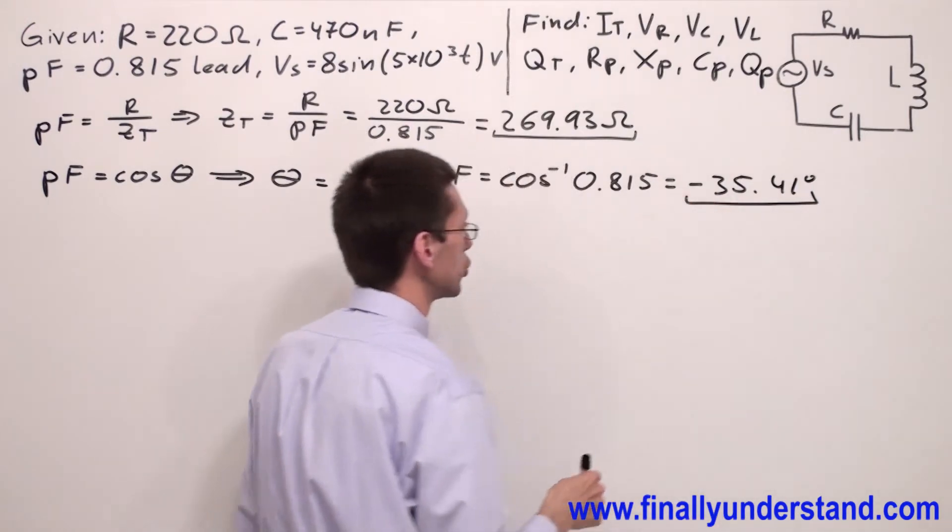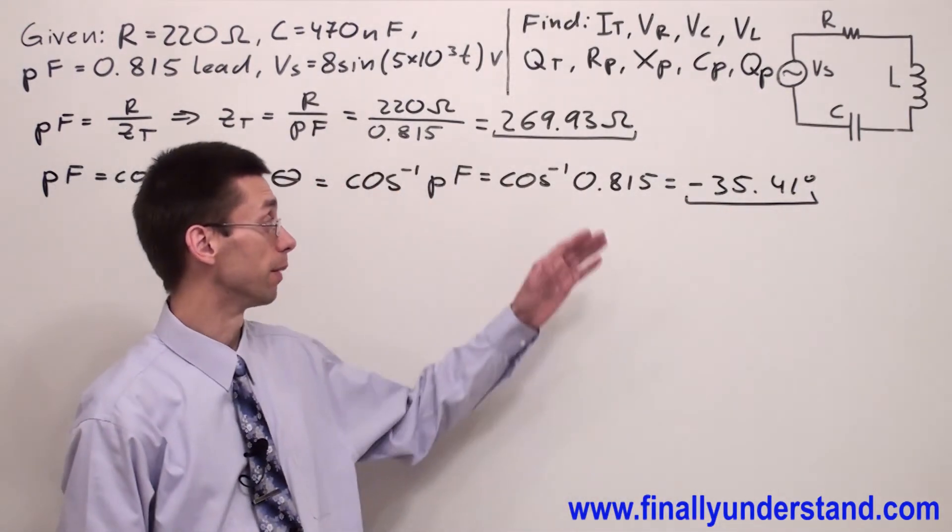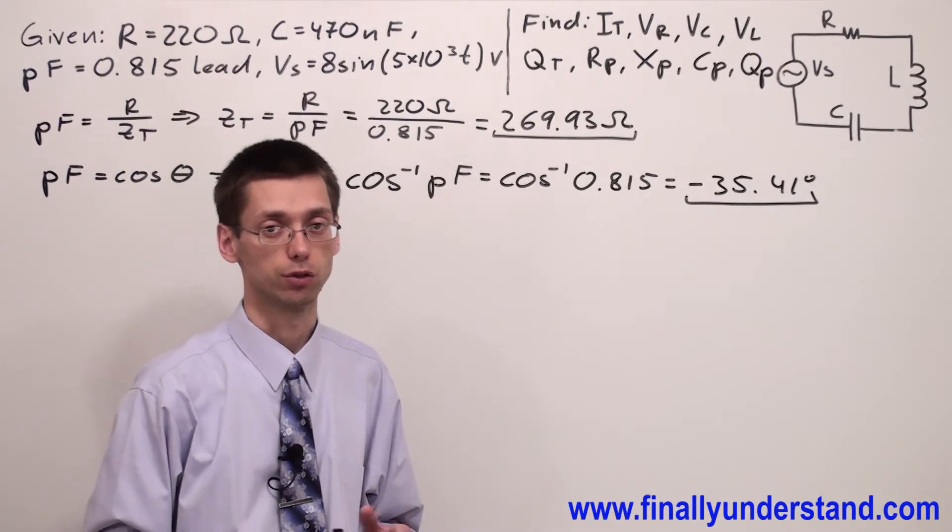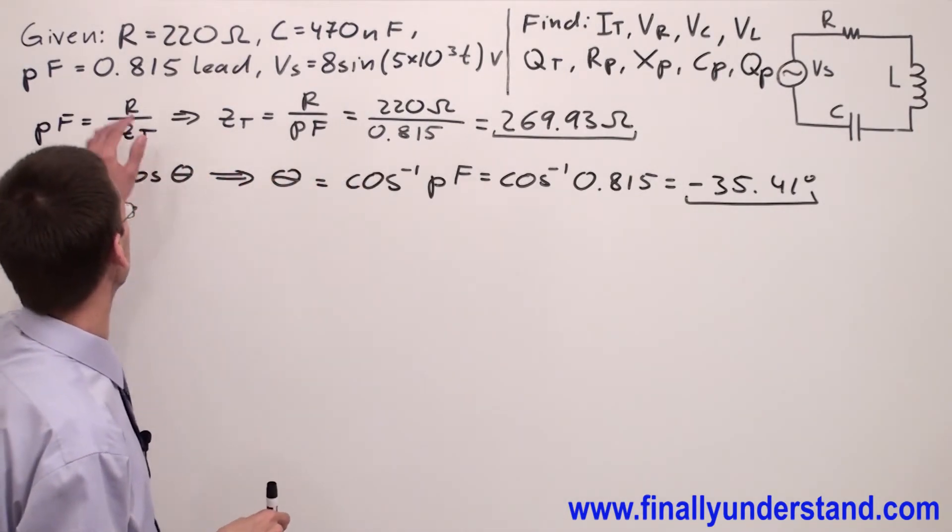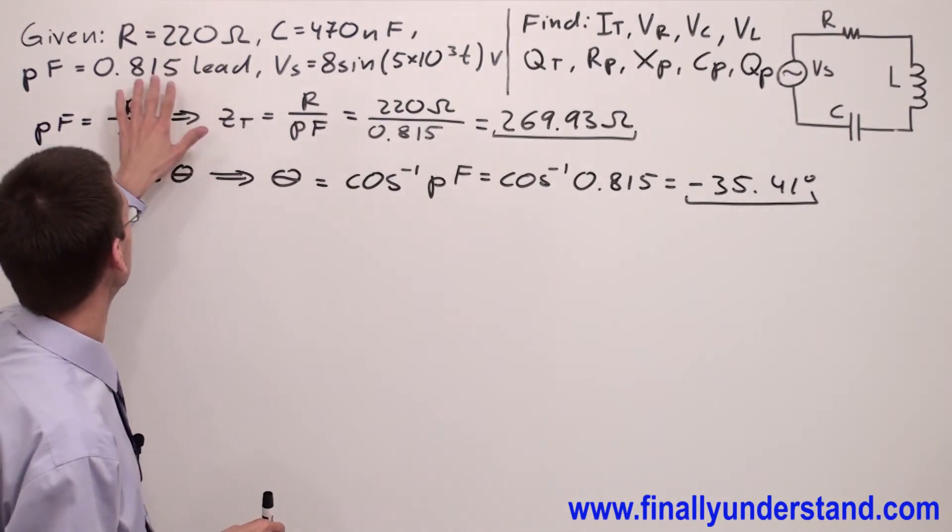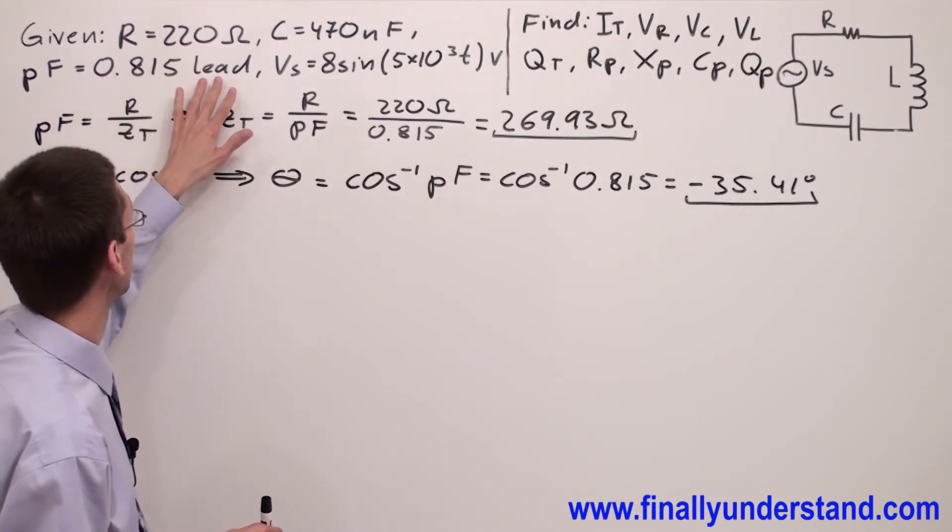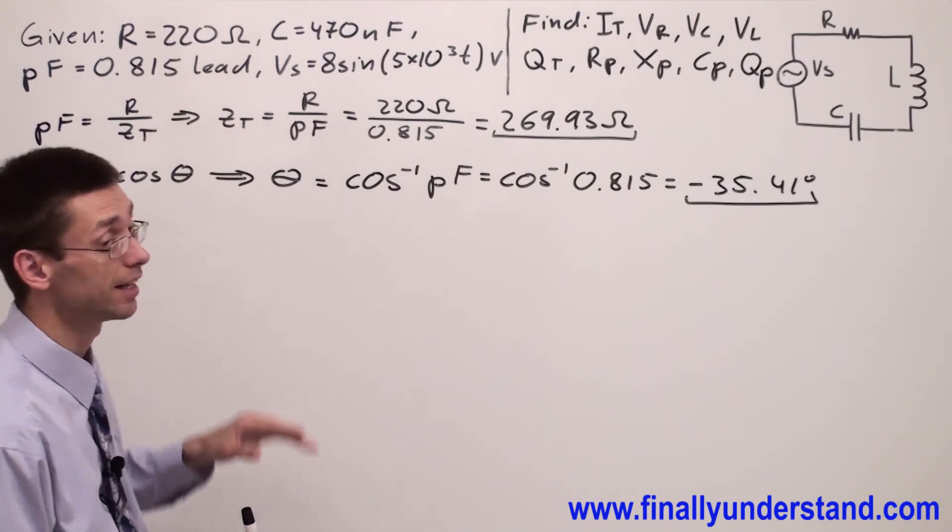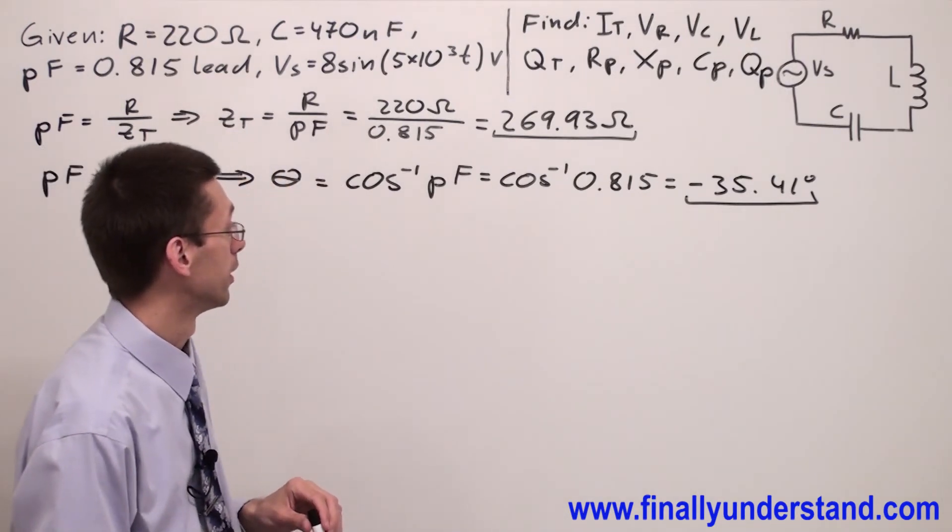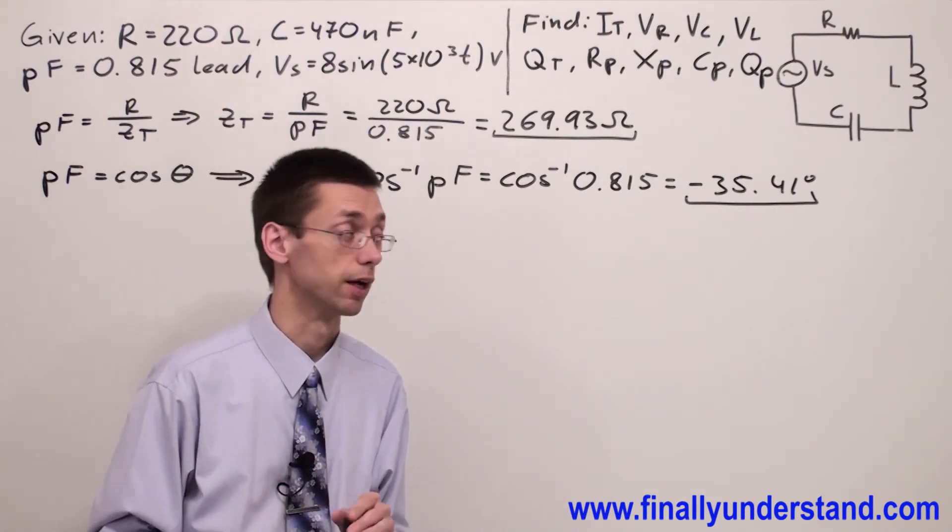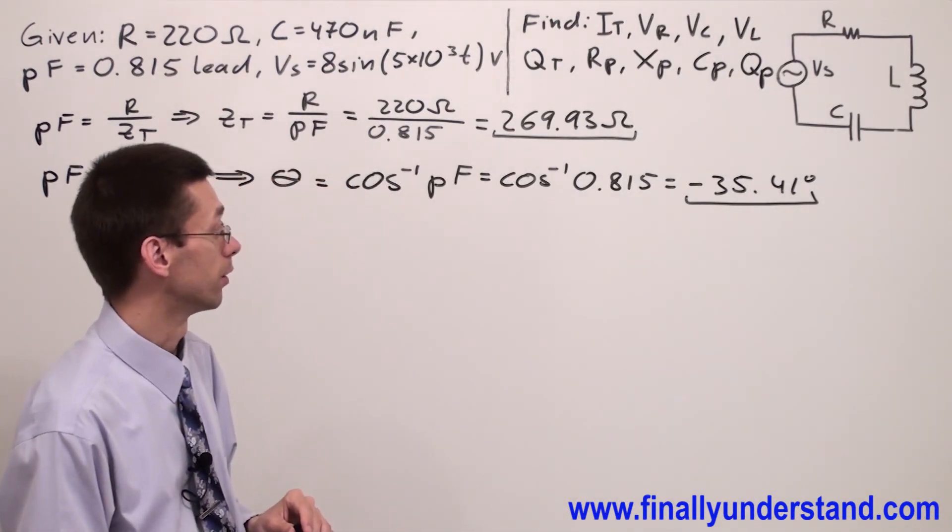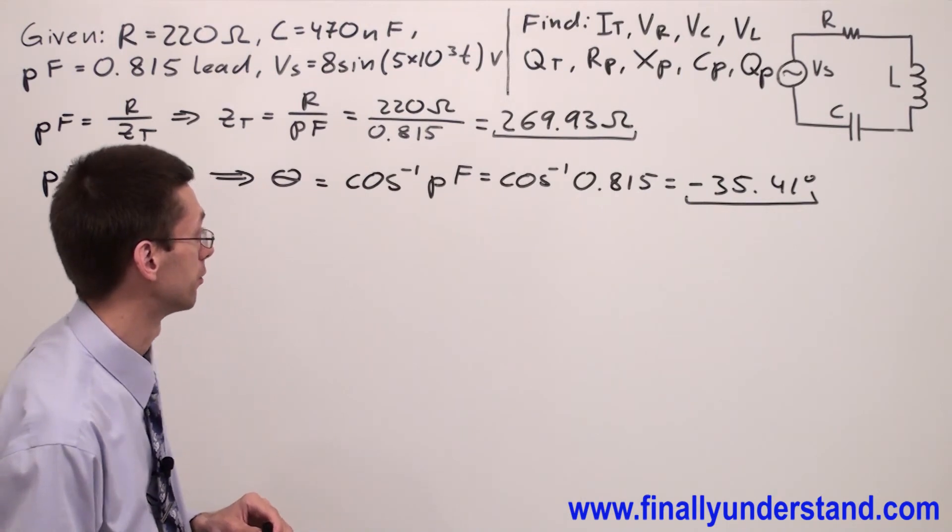Someone is going to ask why did you make the angle negative because my calculator is not showing me negative. You're supposed to realize that next to the value of power factor I got the word lead. Lead is telling me that the angle next to Z total value is going to be with a negative sign.